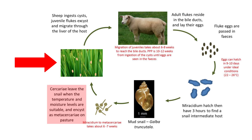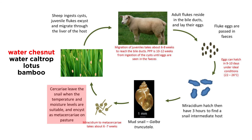Interestingly, some flukes also encyst themselves on aquatic plants such as the water chestnut, water caltrop, lotus, bamboo, and others, until they are consumed by a mammal, where they develop in the duodenum in about three months and attach to the intestinal wall.